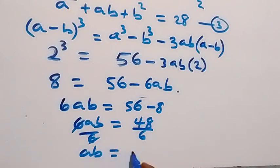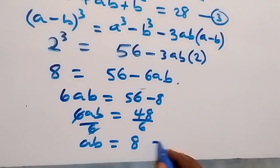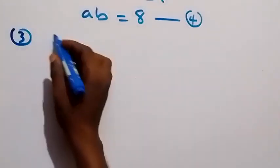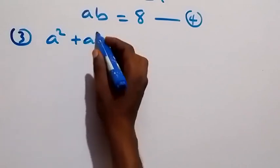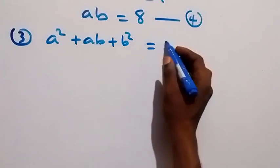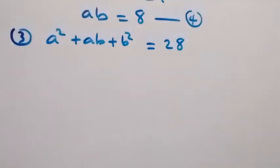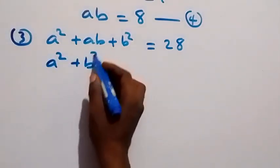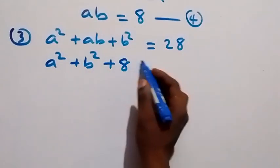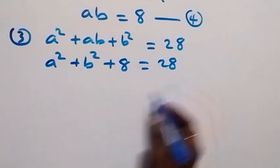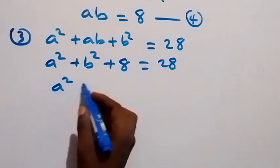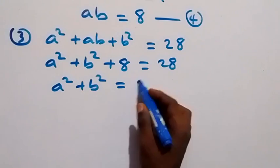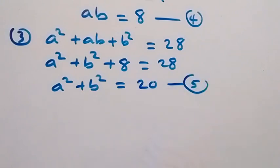Dividing both sides by 6, we get ab equals 8, and let's label this as equation 4. Recalling equation 3, a² + ab + b² equals 28. Substituting ab equals 8, we have a² + b² + 8 equals 28, so a² + b² equals 20. Let's label this as equation 5.